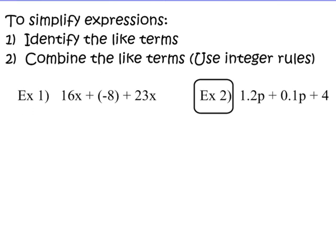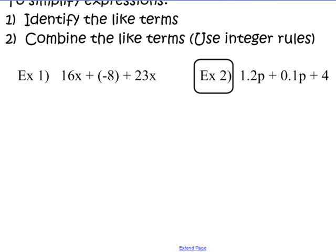Example number 1 — there are 10 of them and I'd like you to copy the ones I do with you into your spiral. Please copy number 1: 16x plus negative 8 plus 23x. I see 2 x-terms here: 16x plus 23x — I can combine those to get 39x. The negative 8 does not have an x on it, so it's a numerical constant that stays separate. My answer is the binomial 39x plus negative 8.